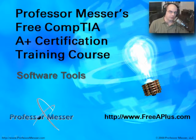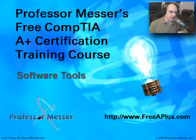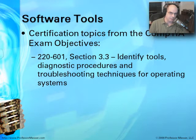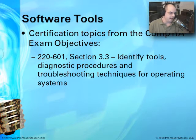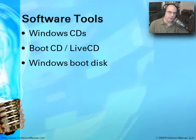Welcome to this module of Professor Messer's free CompTIA A Plus Certification training course. I'm James Messer, and in this module we're going to talk about software tools. We've already talked in previous modules about the hardware we might need, but what about the software we need to take from place to place to solve problems? We're going to speak specifically to the exam objectives from the CompTIA exam - for the 22601, the Essentials Exam, section 3.3, which covers identifying tools, diagnostics, procedures, and troubleshooting techniques for operating systems. To be able to do that, we're going to need software tools.